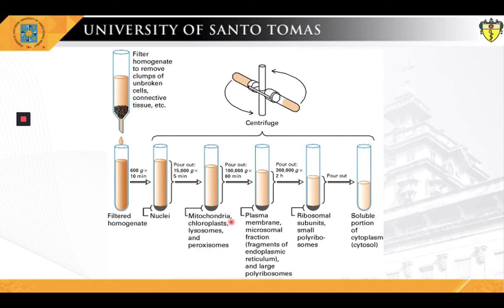Subsequent centrifugation in the ultracentrifuge at 100,000 g for 60 minutes results in deposition of the plasma membrane, fragments of the endoplasmic reticulum, and large polyribosomes. Subsequently, the recovery of ribosomal subunits, small polyribosomes, and particles such as complexes of enzymes requires additional centrifugation at still higher speeds. These fractions containing the plasma membrane, endoplasmic reticulum, and polyribosomes are collectively known as the microsomal fraction.